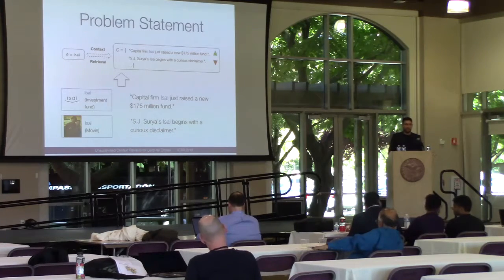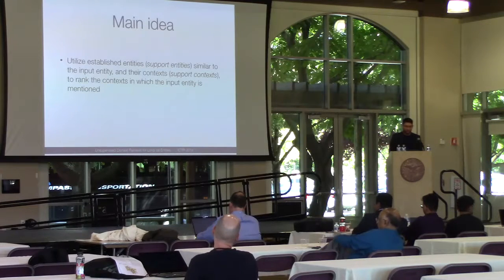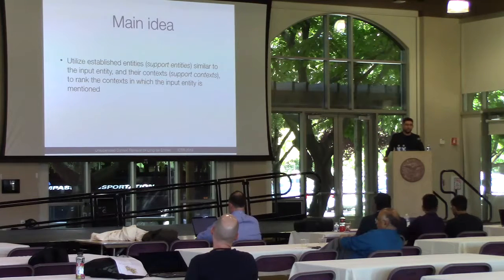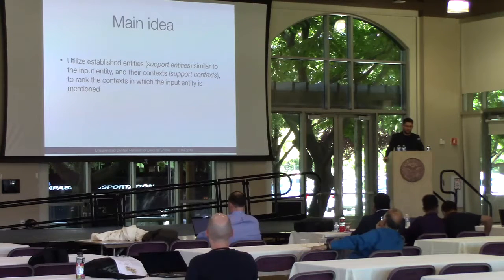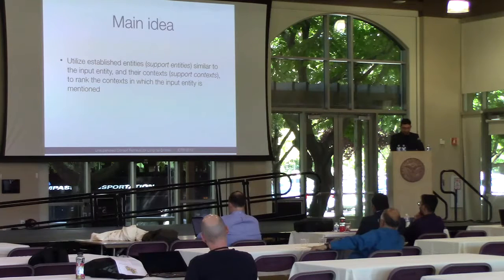This is difficult because of the lack of an existing knowledge base entry. The main idea in this work is to use other entities — well-established entities — that are in some way similar to the input entity, and leverage the contexts of those support entities to help rank contexts for the input entity. I will illustrate this with the running example.